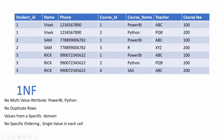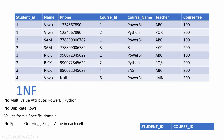One may argue why not use student name and course ID — that also looks unique. But imagine we have another student with the same name Vivek, and we would have problems. Similarly, we cannot choose phone number or course name because Power BI could be taught by another teacher. That is why student ID and course ID is the ideal composite primary key. All columns apart from student ID and course ID — name, phone number, course name, teacher, and course fee — are non-prime attributes.